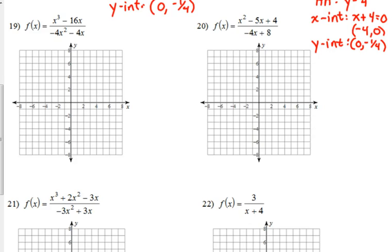Remember our first step when we were trying to graph rational expressions was to factor and simplify these expressions as much as possible. So our numerator here, we need to factor out an x. That leaves us with x squared minus 16.